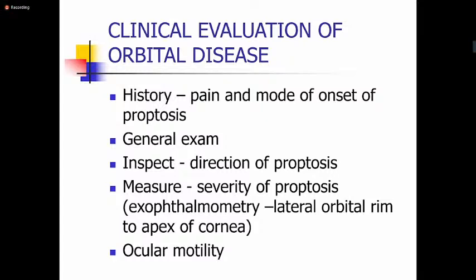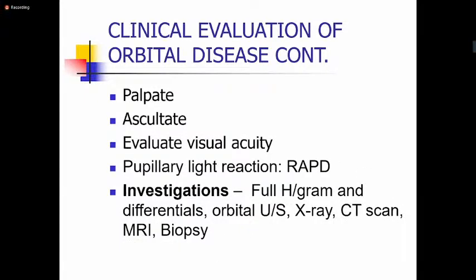Then you also check for ocular motility. You also palpate around the orbital rim to see whether there is any palpable mass — this will tell you where best to approach a biopsy. If there is a vascular lesion, there will usually be an associated bruit. You also evaluate visual acuity and check the pupillary light reaction, looking for a relative afferent pupillary defect, which indicates optic nerve compression.